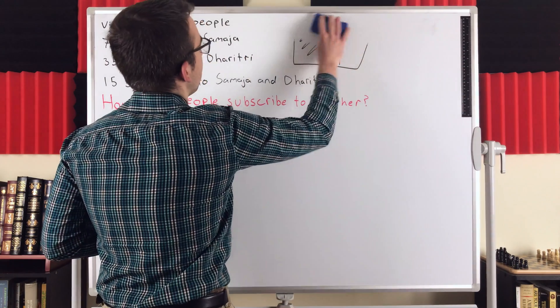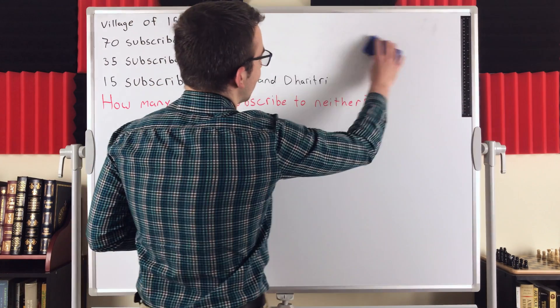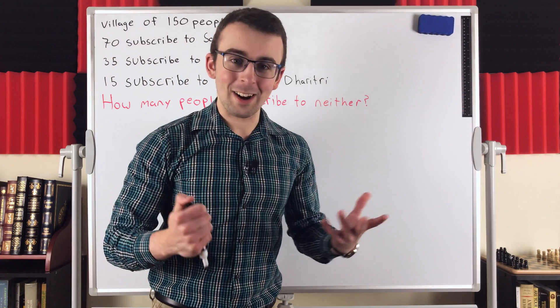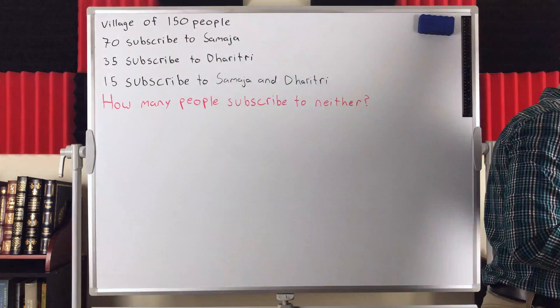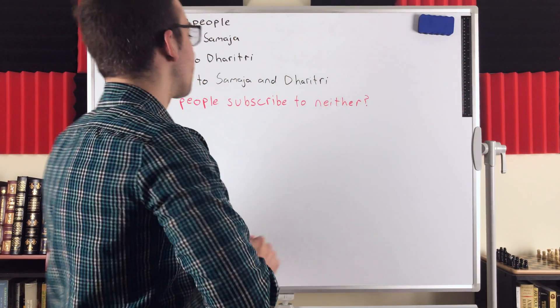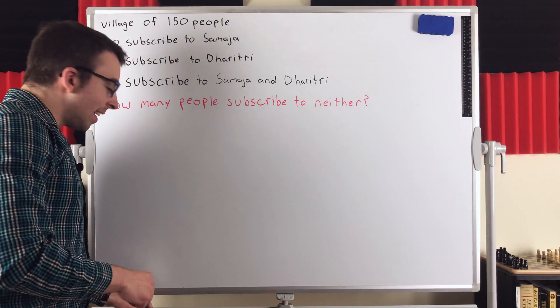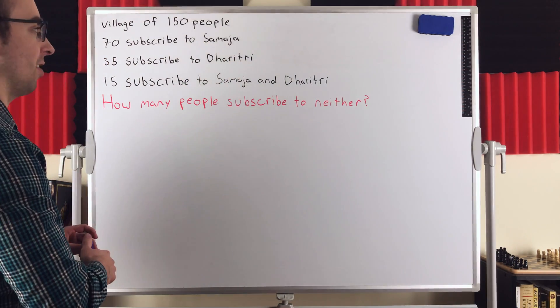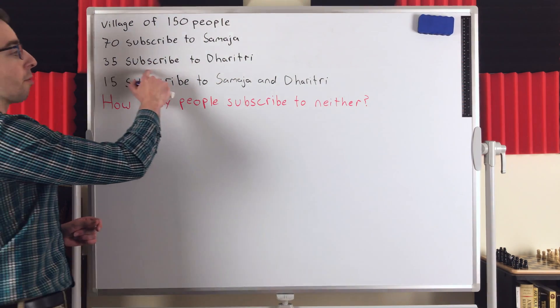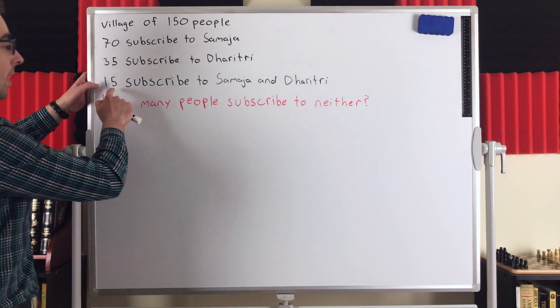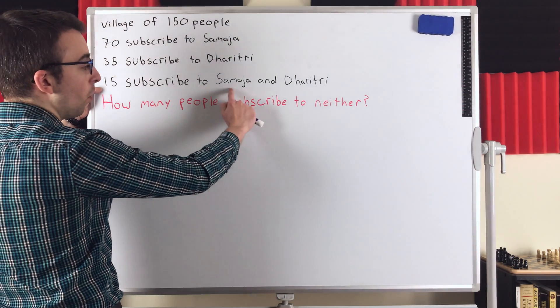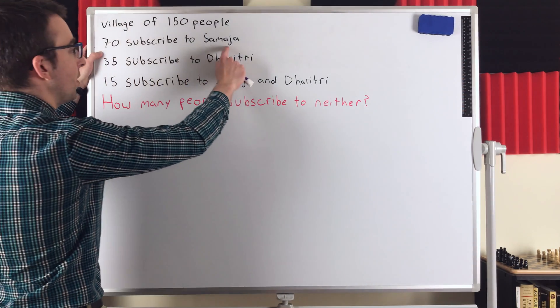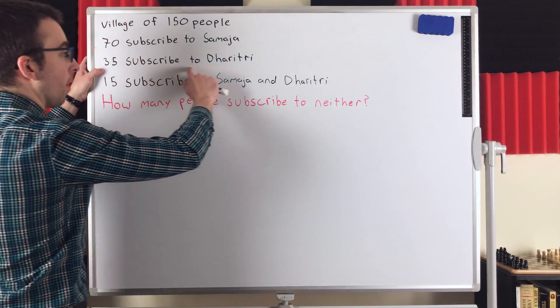So that's the reasoning we're going to use to solve the problem. Now, the delicate part, of course, is finding that answer correctly, which is sort of the crux of every problem. The reason we have to be a little careful with a problem like this is we don't know the number of people who are only subscribed to the Samajah, and we don't know the number of people who are only subscribed to Dhritri. Because these 15 people who are subscribed to both papers, that 15 is a part of this 70, and it's also a part of this 35.